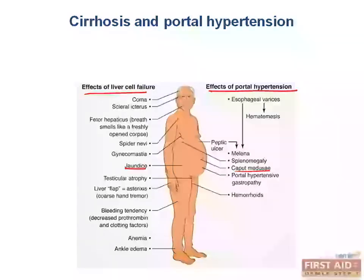Now we'll go head to toe for some of the other effects. Decompensated cirrhosis can put patients into a coma. Scleral icterus is the technical term for jaundice of the eyes. Fetor hepaticus is a foul smell to the breath apparent in late stages. Gynecomastia and testicular atrophy occur due to increased estrogens, and ankle edema. A physical exam finding you may elicit is asterixis, or the liver flap. Lab findings include anemia and bleeding tendencies, specifically a decrease in prothrombin and clotting factors.